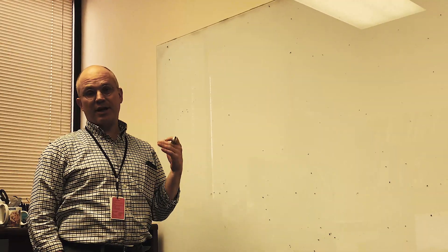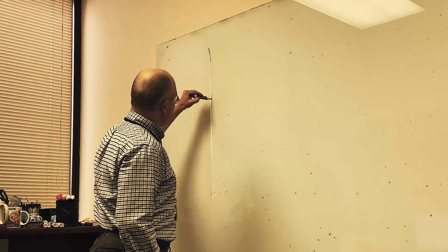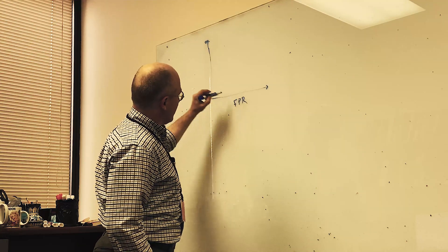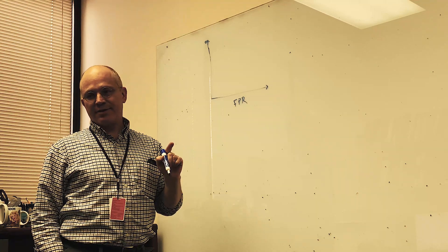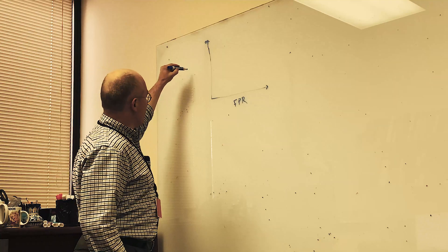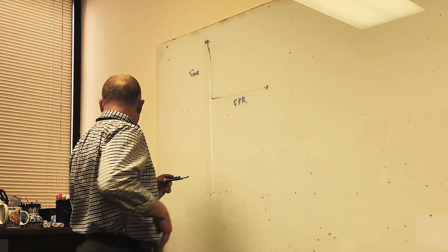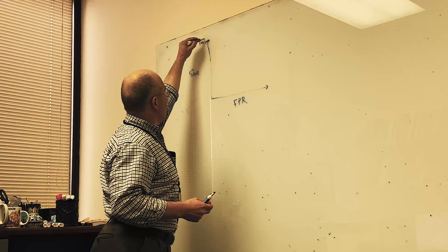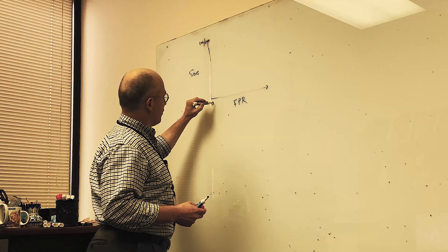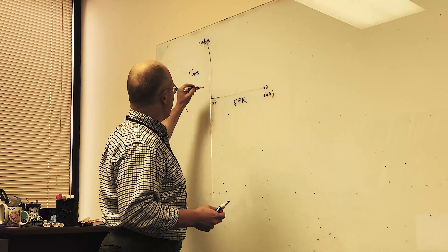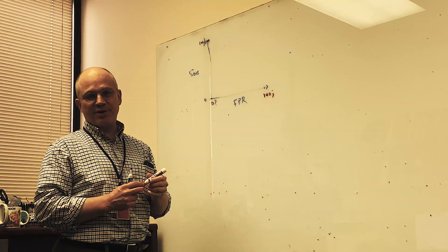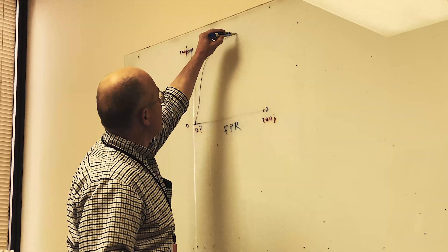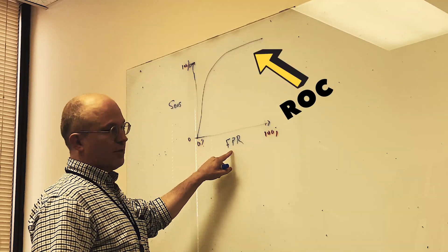We've got sensitivity and false positive rate. It turns out that these are always related. Unless you're the genie, you can't have zero false positive rate and perfect sensitivity. So here's reality. If you're just a mere human or a mere attending, you're going to live somewhere on a curve where you can choose to have a smaller false positive rate.